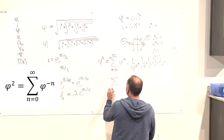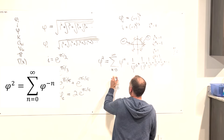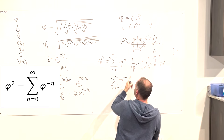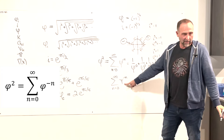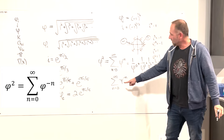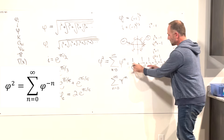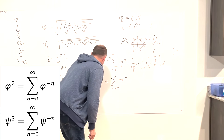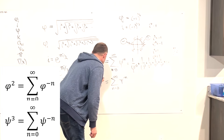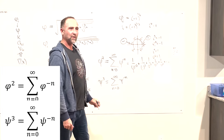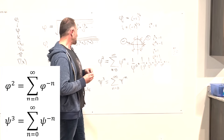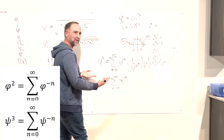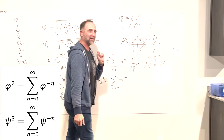The super golden ratio ψ satisfies the same equation — sum from n equals zero to infinity of ψ to the negative n — but as a different base. And this number, doing the same factoring, turns out to talk about itself cubed. So there's something that factors infinitely into two copies, and something that factors infinitely into three copies.